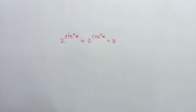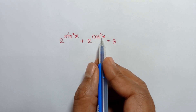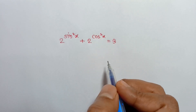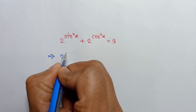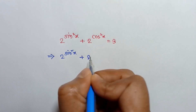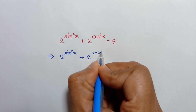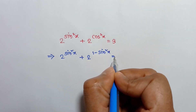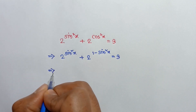Hi everyone. In this video I am going to show how to solve 2 to the power sin squared x plus 2 to the power cos squared x is equal to 3. We can rewrite cos squared x as 1 minus sin squared x.